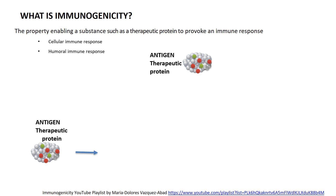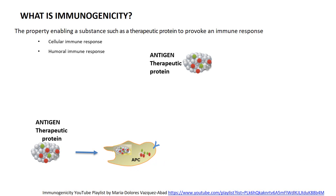This drug is actually presented or seen by what we know as an antigen-presenting cell. This antigen-presenting cell is most likely a dendritic cell. The majority of them are dendritic cells, although other cells can act as antigen-presenting cells — like the B cells, which can also be antigen-presenting cells.